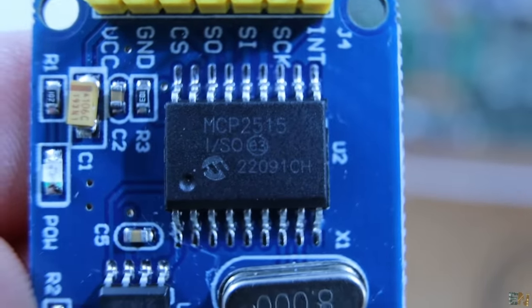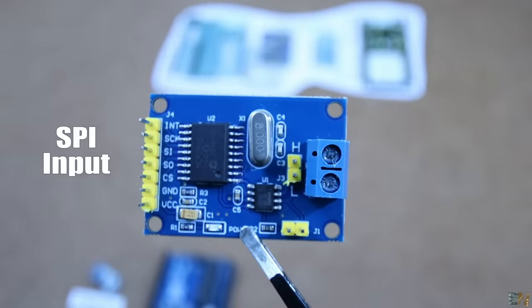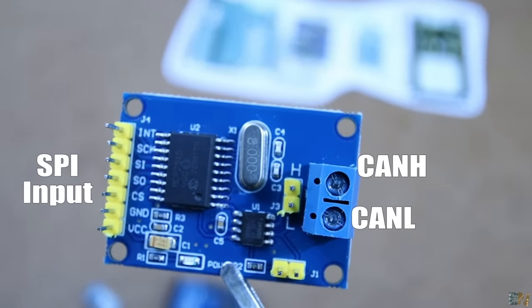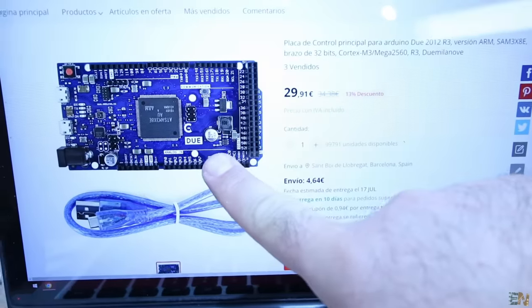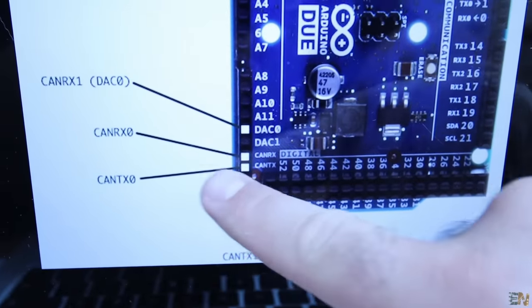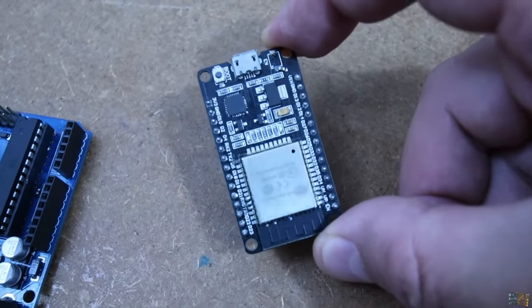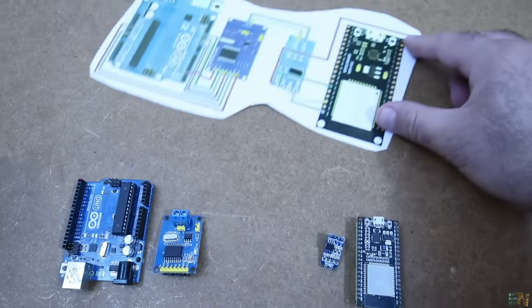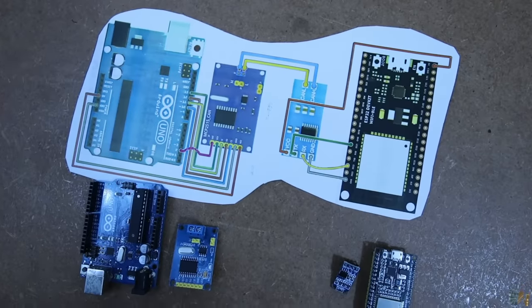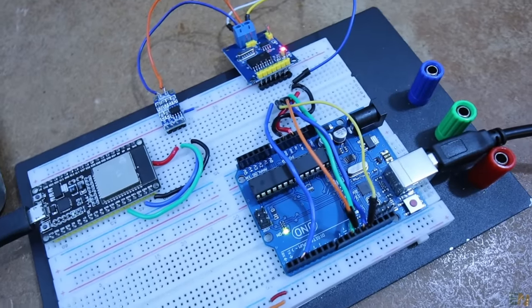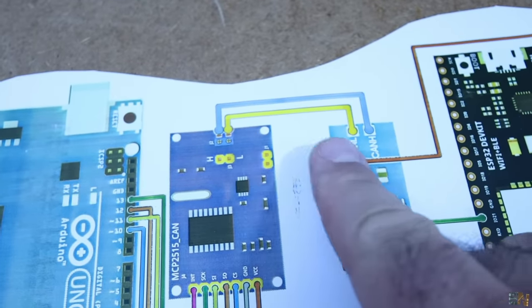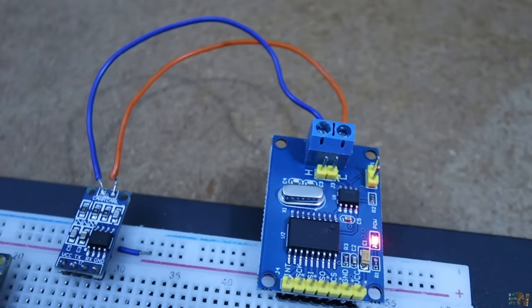By the way, the Arduino Due does have CAN controller pins but I don't have a Due right now. But the ESP32 also has CAN controller pins so we could use that. So I will connect the module with the CAN controller to the Arduino Uno and the CAN transceiver without the controller directly to the ESP32 as in this schematic. Then I connect the L and H lines from one module to the other.